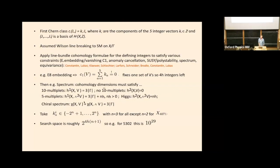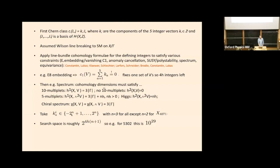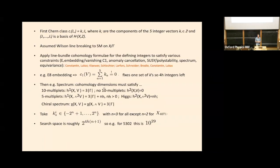We have to satisfy various conditions: vanishing first Chern class, anomaly cancellation, poly-stability conditions, and the spectrum. We end up with a whole load of Diophantine equations involving these integers k, and we restrict our search space letting k go from minus 2^n to plus 2^n. We let n equal 3 for everyone except the last Calabi-Yau which is the 4071, mainly because it's got a larger h_{1,1} of seven. The search space for 5302 for example would be 10^29, and it can be limitlessly large if you allow larger k's.